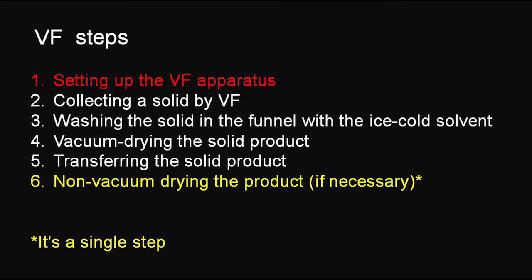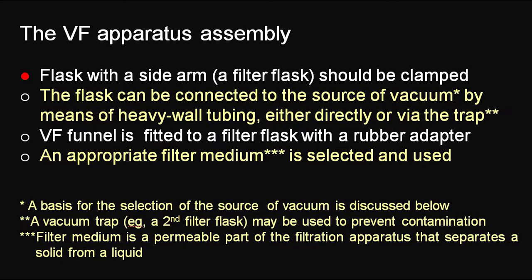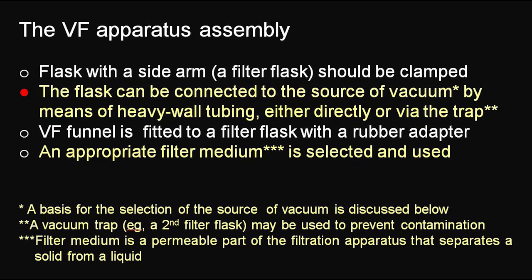The important thing to remember about the vacuum filtration apparatus assembly is to make sure the filter flask is clamped securely before connecting its side arm to the source of vacuum by means of heavy-wall tubing. This can be done either directly or indirectly via a vacuum trap. The trap — for example, a second filter flask — may be used to prevent contamination due to back suction.